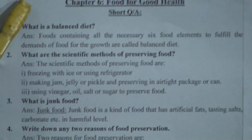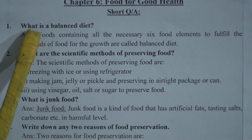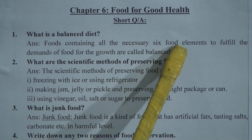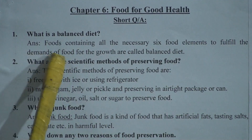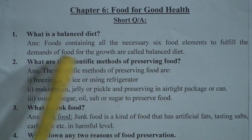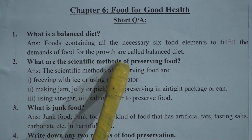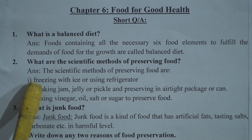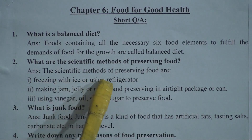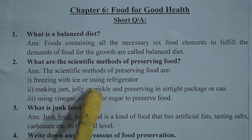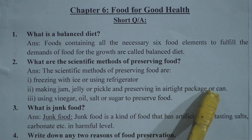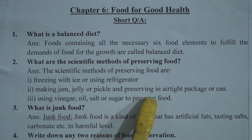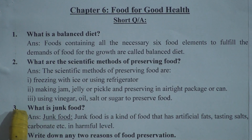Now let us come to the short questions of this chapter. Question 1: What is a balanced diet? Answer: Food containing all the necessary six food elements to fulfill the demand of food for growth is called a balanced diet. Question 2: What is the scientific method of preserving food? Answer: The scientific methods of preserving food are — first, freezing with ice or using a refrigerator; second, making jam, jelly, or pickle and preserving in airtight packages or cans; third, using vinegar, oil, salt, or sugar to preserve food.